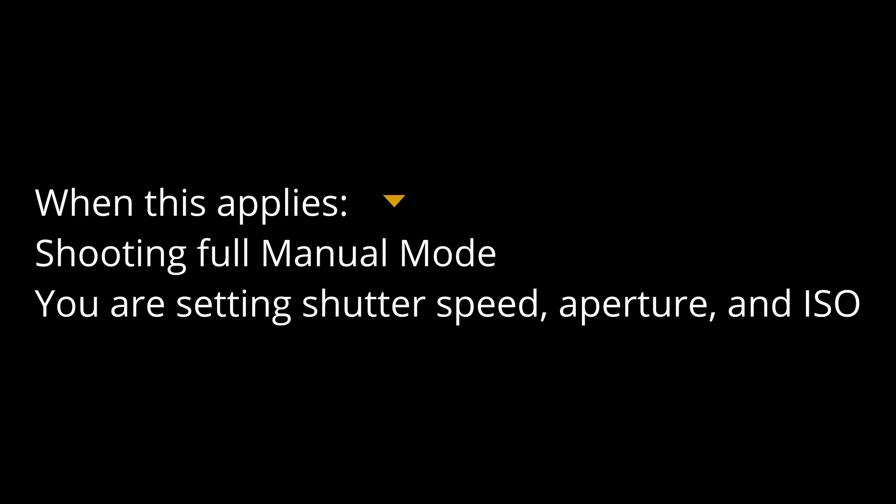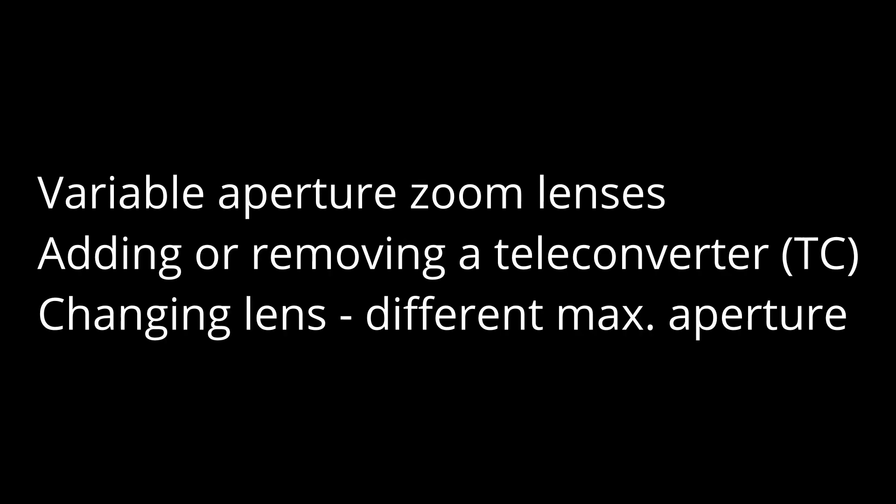Let's get into this. When does this setting apply? It really only applies when you're shooting in full manual — you're setting the shutter speed, aperture, and ISO yourself. So if you're in any other mode at all, or if you're set to auto-ISO, this isn't going to apply, because as things change when you're zooming in and out and your aperture is changing, things are going to adapt based on the meter of the camera. So that's only going to apply when we're in manual.